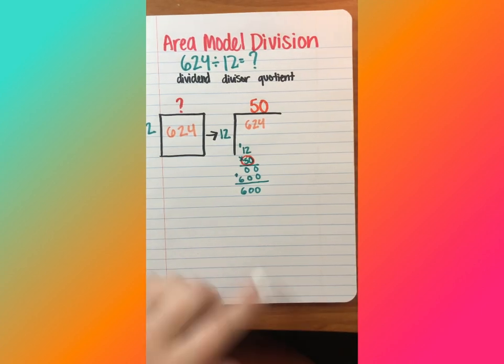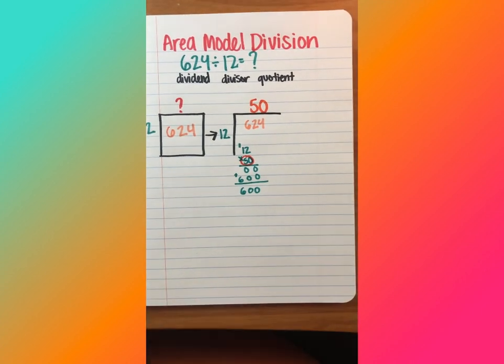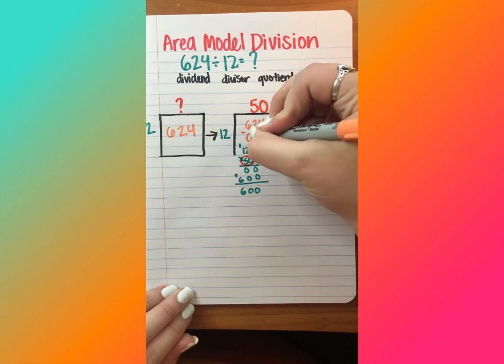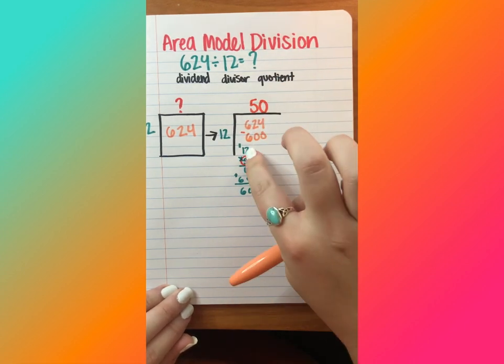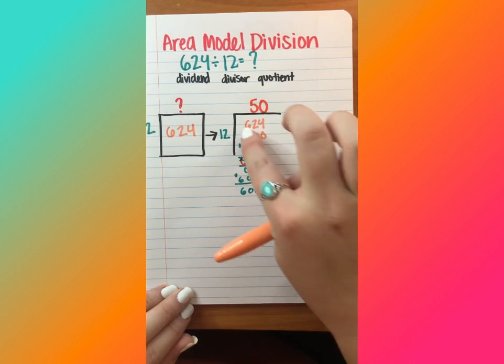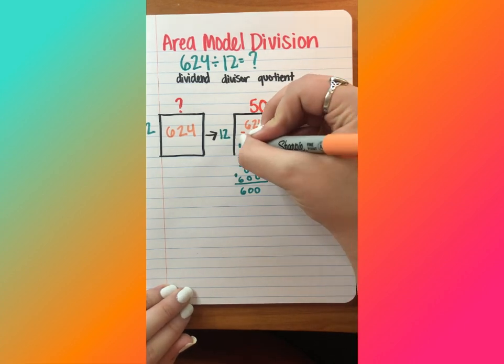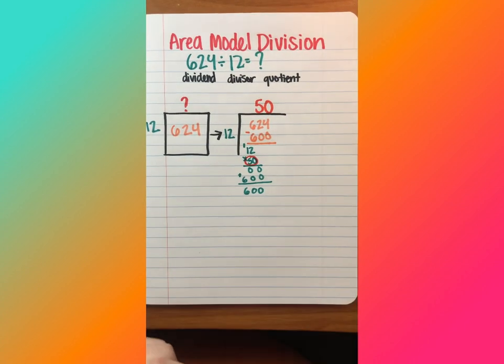And the next step is to take that and subtract 600 because we did 12 times 50 equals 600. So we're subtracting 600 from 624. And I'm left with 24.